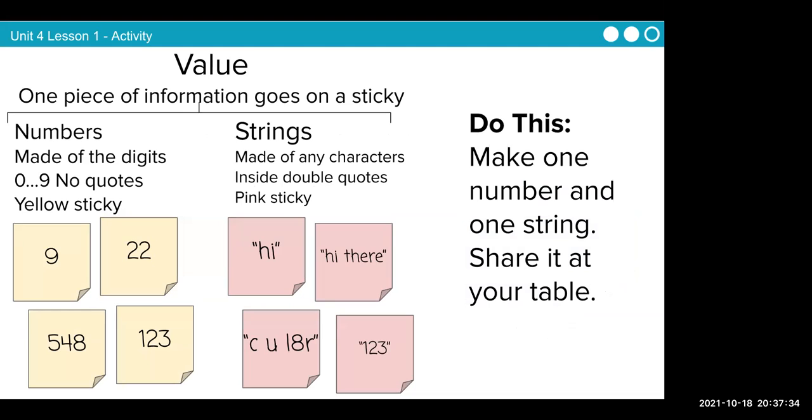Value. One piece of information goes on a sticky. Numbers made of digits, zero through nine, no quotation marks, go on a yellow sticky. Strings made of any character inside double quotes go on a pink sticky. Typically see how it's letters like 'hi' there, but it can also be letters and a number like 'see you later' or one, two, three. Once you put it inside the double quotation marks, it is now a string. A string is just an object. It's a way computers do not read English. They do not read letters. They understand numbers. They do not need quotes. This turns these basically into a giant icon, but they recognize the icon. So make one number and one string and share it at your table.